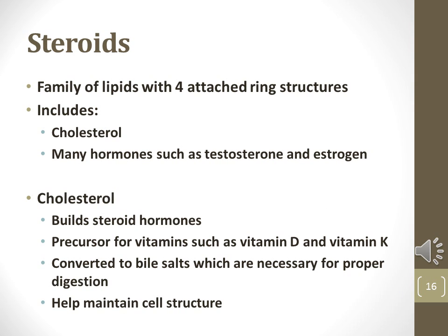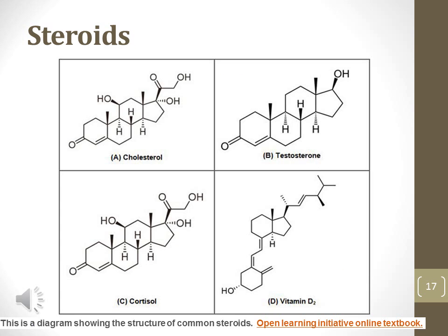Steroids are a family of lipids with four carbon ring structures. Steroids include cholesterol and many different hormones such as testosterone and estrogen. Steroids are responsible for hormone production, vitamin production, lipid digestion, and general cellular health. This chart shows several important types of steroids: cholesterol, cortisol, testosterone, and vitamin D.